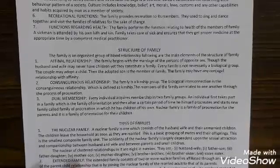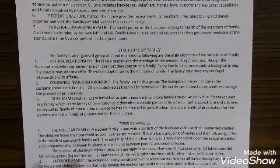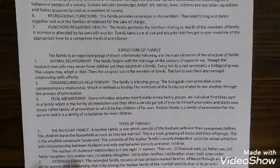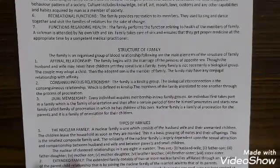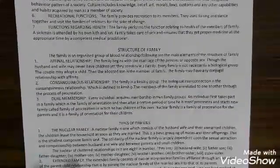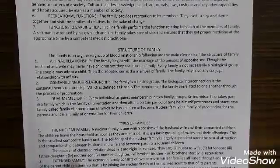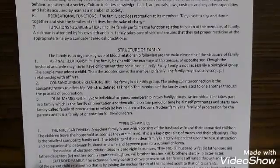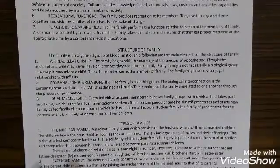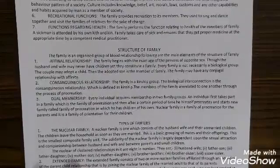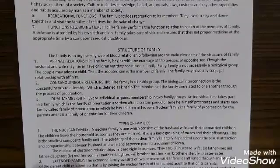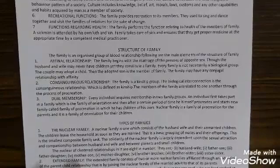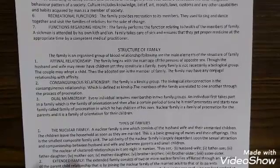Number one: a conjugal relationship. The family begins with the marriage of persons of opposite sex — one will be a male and the other will be a female. Though the husband and wife may never have children, yet they constitute a family. If there are no children, then also the husband and wife will be called a family. Every family is not necessarily a biological group; the couple may adopt a child, and the adopted child is a member of the family.